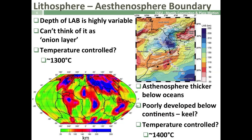The asthenosphere is highly variable. The depth of the lithosphere-asthenosphere boundary can vary both on a global scale and on a local scale — here looking at the LAB boundary between southern Spain and northern Africa. We can't think of it as a simple onion layer within our Earth structure. The top of the asthenosphere seems to be temperature controlled around 1,300 degrees centigrade, and the bottom is even more poorly constrained, possibly around 1,400 degrees centigrade. It's much better developed below oceans and quite poorly developed beneath continents, leading us to think there may be some kind of continental keel sitting beneath our continents.